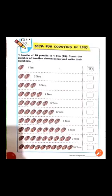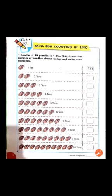Let's start the last topic — Deca Fun: Counting in tens. 1 bundle of 10 pens is 1 ten. Count the number of bundles shown below and write the number. ہم نے 10 کو سیکھنا ہے — 10 کسے بولتے ہیں؟ جب ہمارے پاس 1 ten ہوگا تو ہم اسے 1 ten بولیں گے۔ مثلاً میں آپ کو ایک bundle دیتی ہوں جس میں 10 candies ہیں — اس bundle کو ہم shortcut نام دیں گے: 1 ten۔